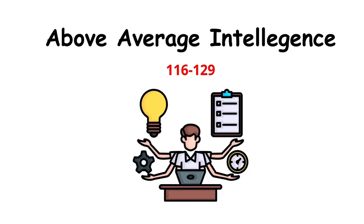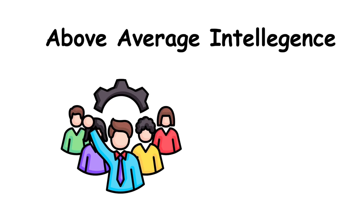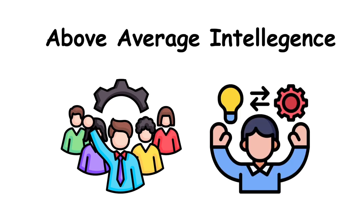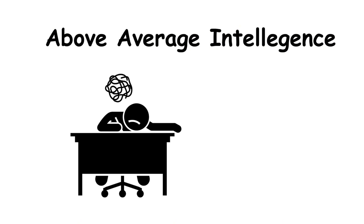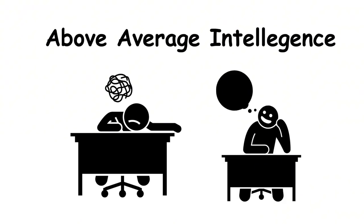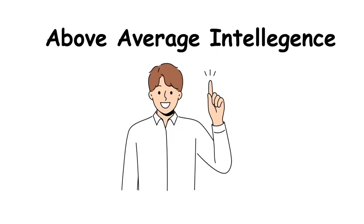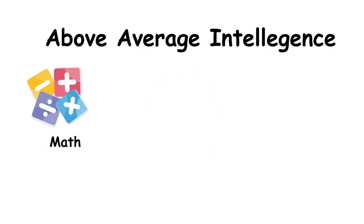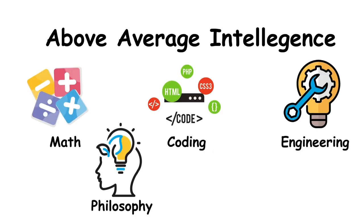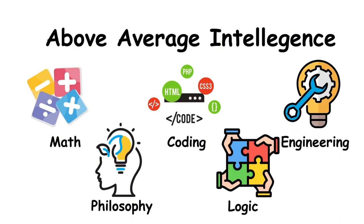Above average intelligence means having an IQ between 116 and 129. People at this level learn faster than most. They don't just understand information, they see patterns and connect ideas others might miss. In school, lessons may feel slow or repetitive, and they often grasp concepts quickly while others catch up. This intelligence shines in problem-solving fields like math, coding, engineering, and philosophy, where logic and abstract thinking matter.